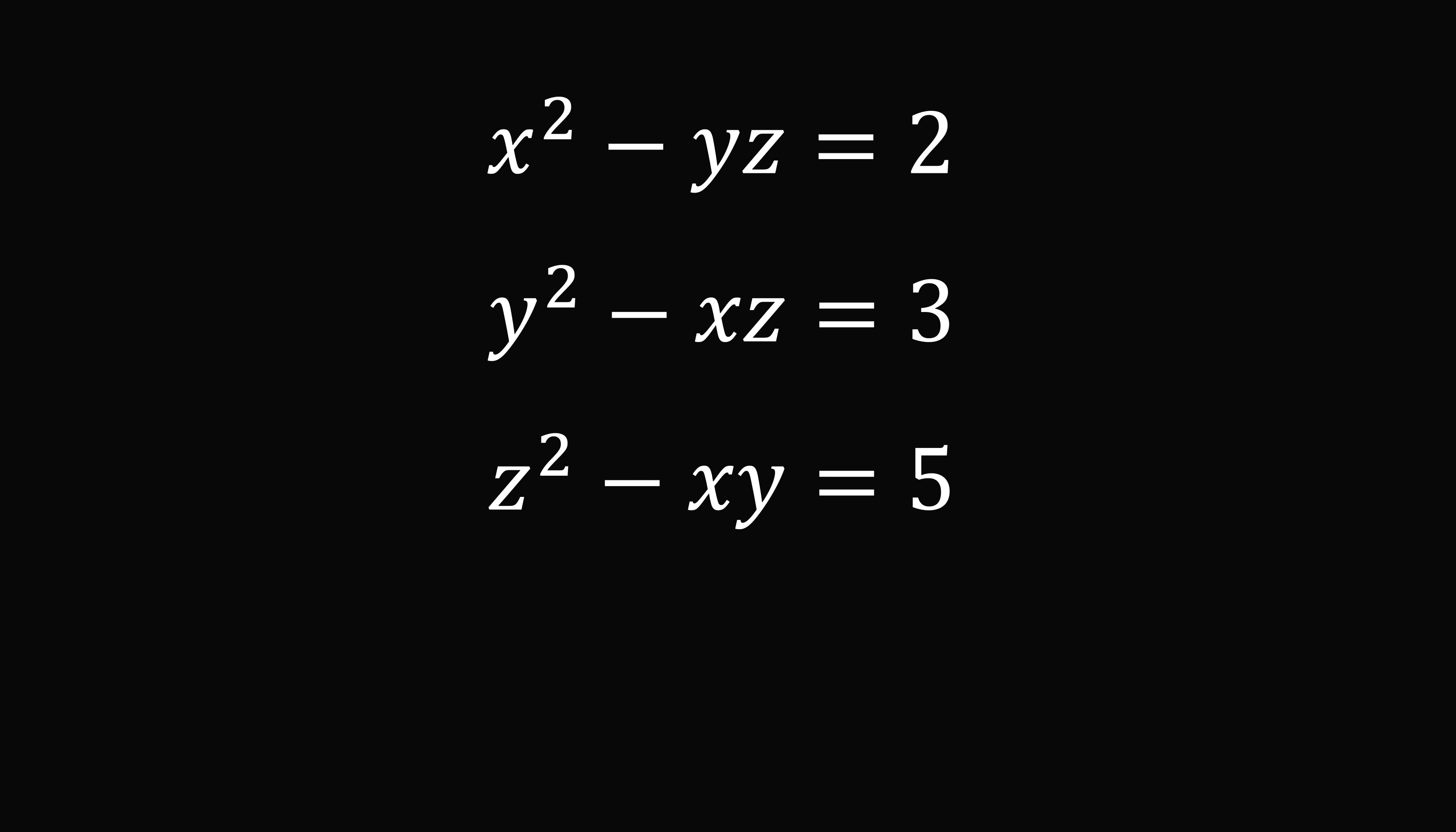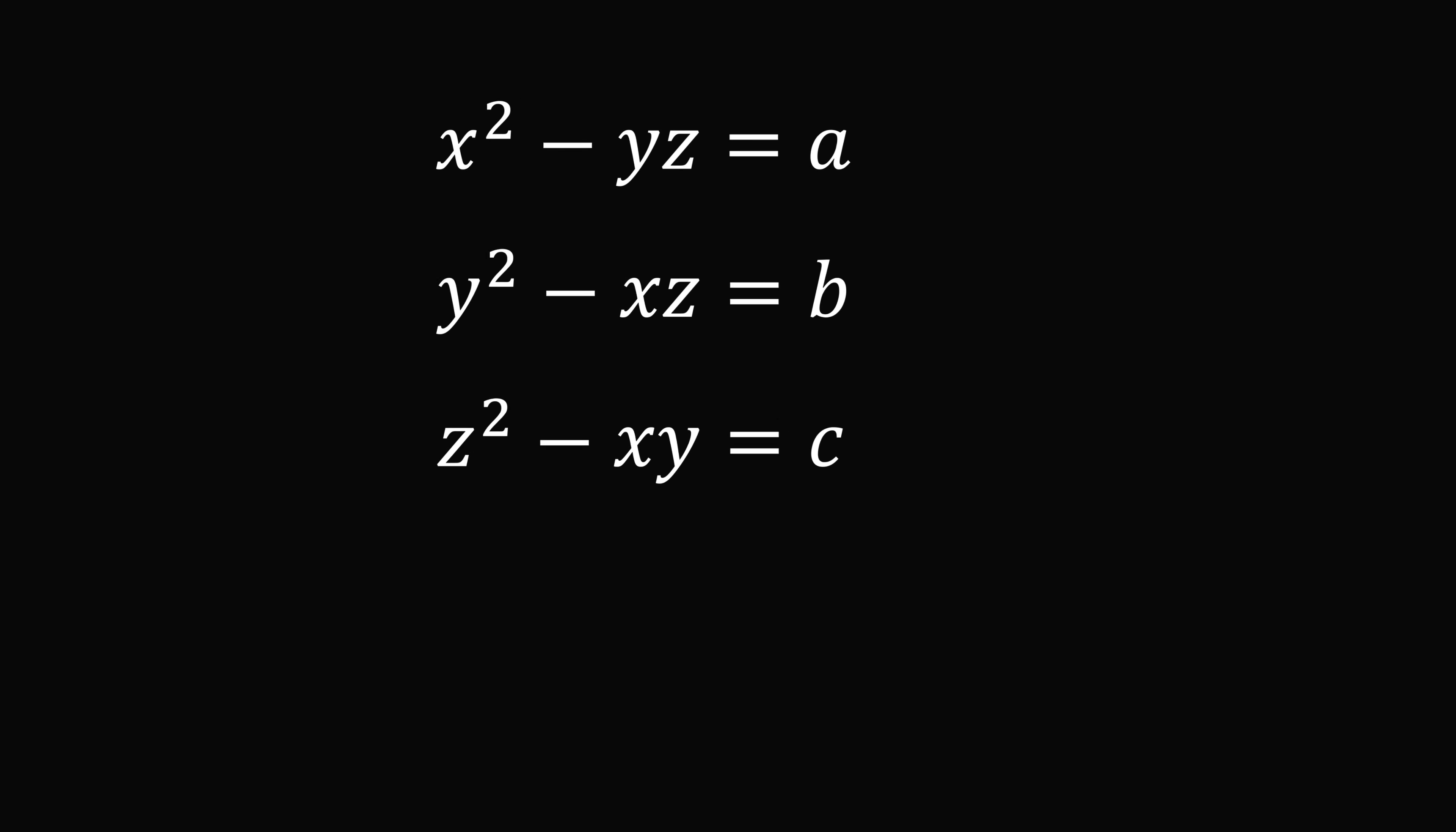Rather than just solving for these three specific equations, we will find a general solution where the equations are equal to the unknown constants a, b, and c. How do we work this out? Here's a trick. We're going to eliminate all of the square terms. To do that, we multiply the first equation by y, the second equation by z, and the third equation by x. Here are the resulting three equations.